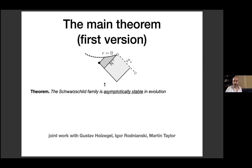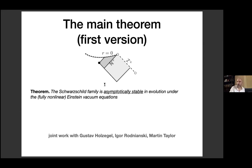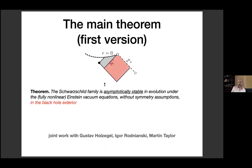The main theorem I want to talk about, joint work with Holzegel, Rodnianski, and Taylor: the Schwarzschild family is asymptotically stable in evolution under the fully nonlinear Einstein vacuum equations without any symmetry assumptions, in the black hole exterior. The black hole interior is different, but fortunately one can show stability in the exterior without knowing anything about the interior.